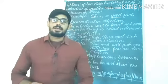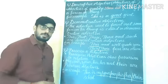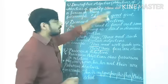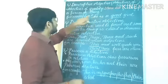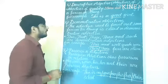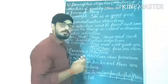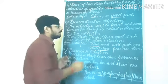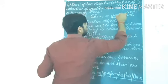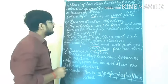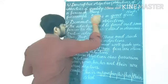Dear students, whatever is written on the blackboard, you have to write in your grammar copy. First, we are going to discuss descriptive adjectives, which we know as adjectives of quality. Adjectives of quality show the quality of a person or thing. For example: 'She is a good girl.' One thing to keep in mind — adjectives mostly come before the noun. Here 'girl' is a noun and 'good' is an adjective of quality.